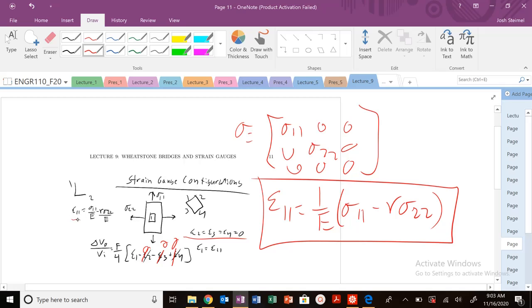I have some component of the strain I'm measuring in one arm that's going to be positive because my wires elongate in this direction. The wires elongate as I pull this in tension.